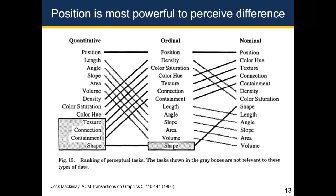This is a paper from 1986 designed to illustrate which perceptual tasks are easiest for humans when looking at different types of data. For all three types — quantitative, ordinal, and nominal — changes in position are the easiest to perceive. After that it changes a little bit. For quantitative variables, the next easiest thing to perceive is a change in length, and then a change in angle.